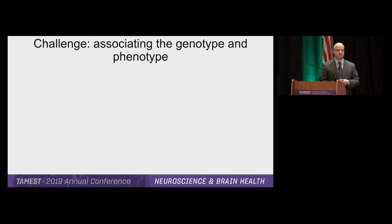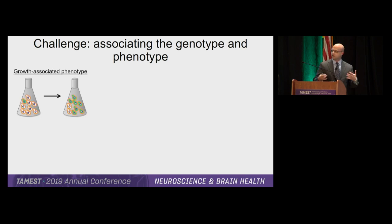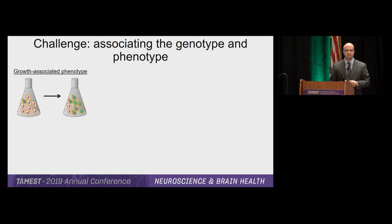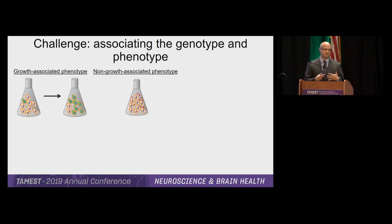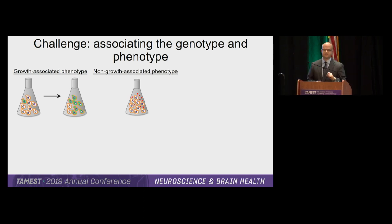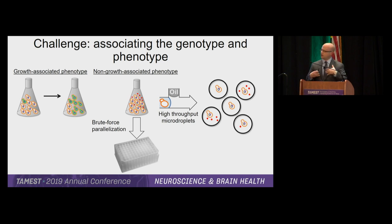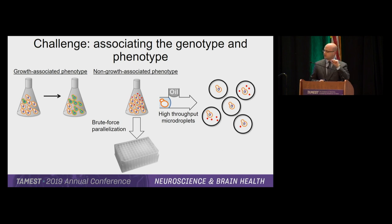One of the underlying challenges is associating genotype and phenotype. Typically we look at growth-associated phenotypes — the cell that grows quickest gets enriched. However, we actually want to make metabolites, not just faster-growing cells. Cells that produce more metabolite often grow slower. To select for metabolically efficient cells, we use compartmentalization: high-throughput microfluidics creating oil-water emulsion droplets to essentially trap cells, query the amount of molecule in each droplet, and create a physical link between genotype and phenotype.